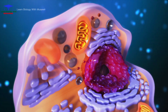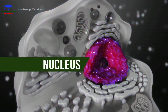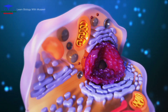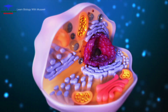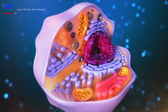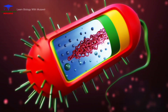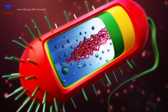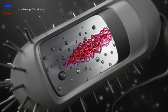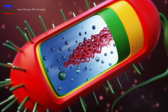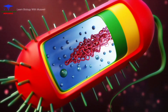Eukaryotic cells have a membrane-bound nucleus that holds all of the DNA in one part of the cell, as well as many other organelles. Prokaryotic cells do not have a membrane-bound nucleus, so the DNA, which is usually a single circular molecule, floats in the cytoplasm of the cell.